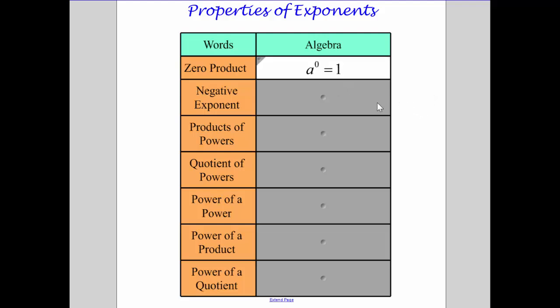In our zero product, when you have a to the zero power, that ends up equaling one. When you have a negative exponent, if it's a, the base goes into the bottom and your exponent becomes positive. If you have a fraction, the a and the b switch places, and the n, the exponent, becomes positive.